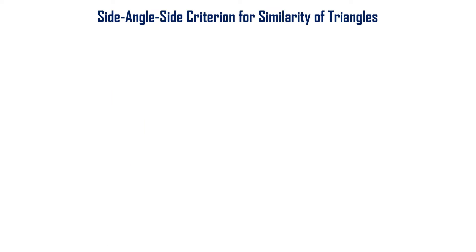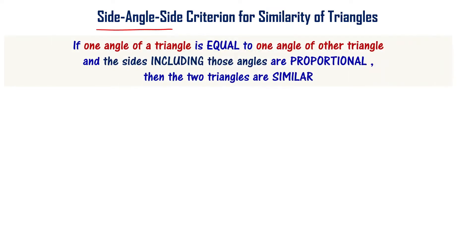Let us now learn about the Side-Angle-Side (SAS) criterion for similarity of triangles. If one angle of a triangle is equal to one angle of another triangle, and the sides including those angles are proportional, then the triangles are similar.